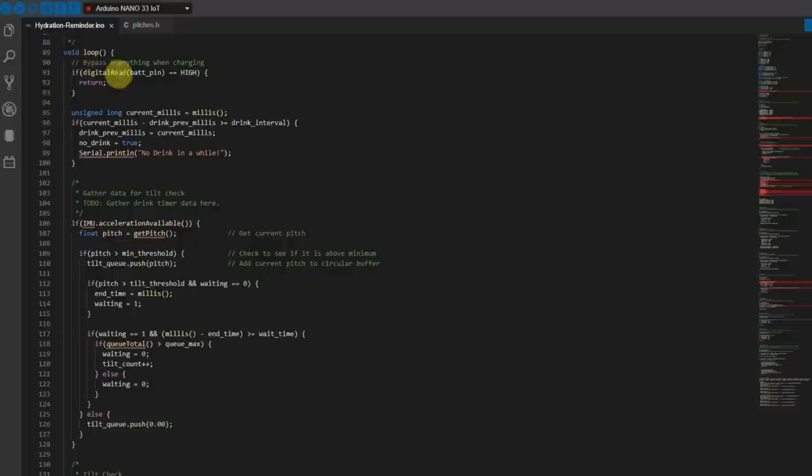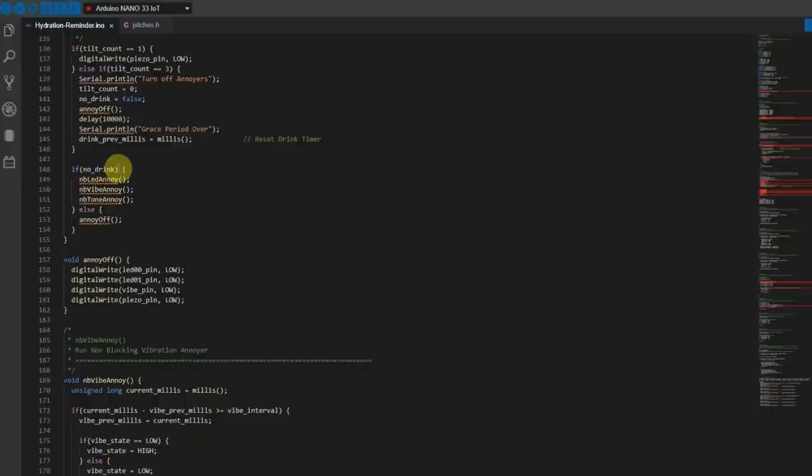This is something that I just discovered today. When I plug power into the power boost, it powers the Arduino. And I don't want that because I don't want this thing buzzing at me all night while it's charging. What I did was pulled power off of the USB input pin, built a little voltage divider to knock that down to about 2.5 volts because the Arduino is a 3.3 logic device, and then read it on a digital read here. And when that is high, that means that the battery is charging. Just return and it'll bypass all of the rest of the stuff here. We have our drink timer, which is going to set no drink to true. And then all the way down here, if no drink is true, then we turn on all of the annoyers. Otherwise, we turn them off.